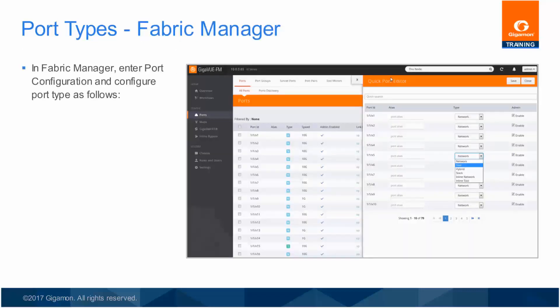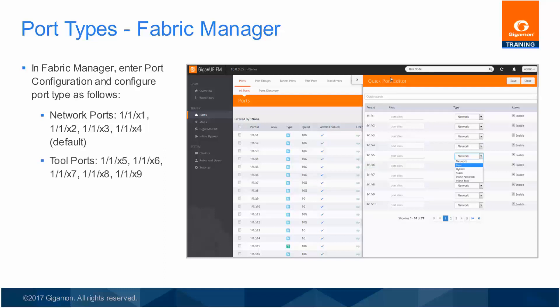Before any GigaSmart operation, log into Fabric Manager and configure which ports on a node serve as network ports and which ones serve as tool ports. Use the Quick Port Editor panel to select the port type. Since all ports are network ingress ports by default, some ports need to be changed to behave as tool egress ports. To change a port's behavior, first select Tool from the Type drop-down menu. To change the port type for multiple ports with a single click, change the port type to Tool on ports X5 through X9 and then click Save at the top right to save this configuration.